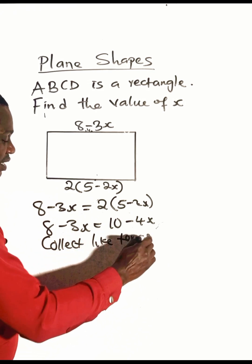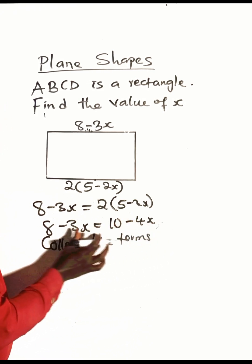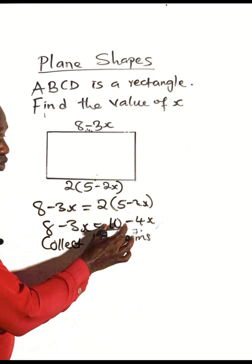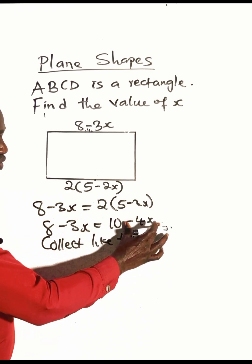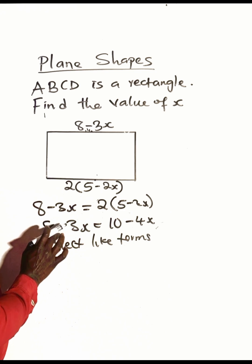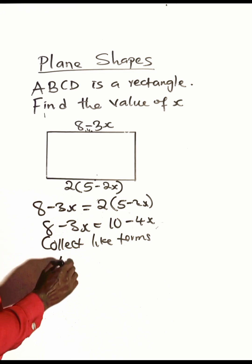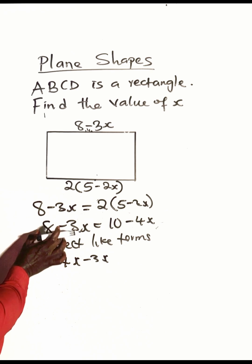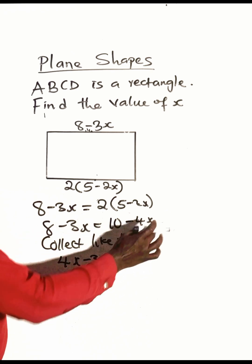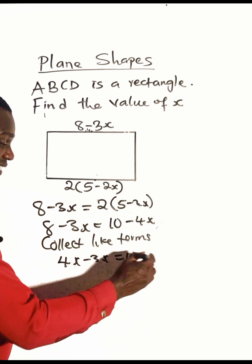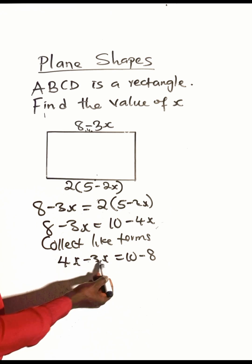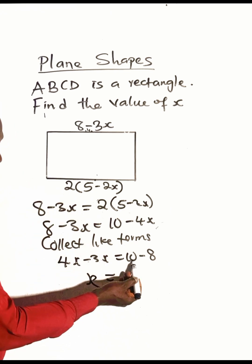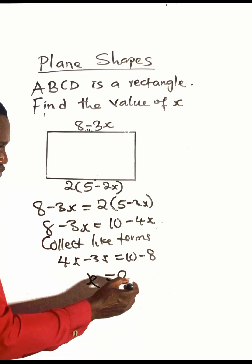At this point we need to collect like terms. The terms with x are alike, and the terms without x are also alike. Bringing minus four x across gives four x minus three x, and the positive eight crosses over to become negative eight. Four x minus three x is just x.